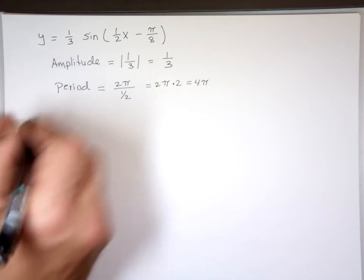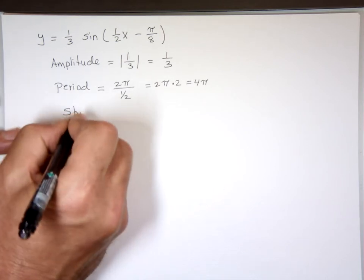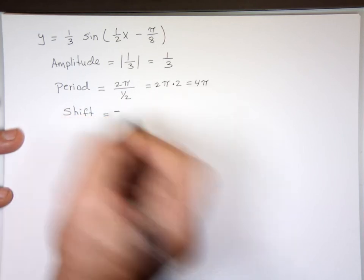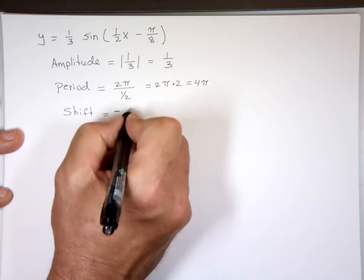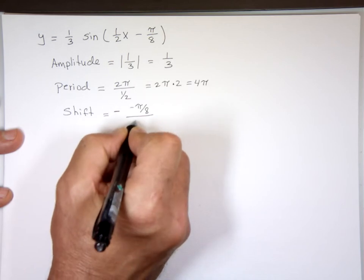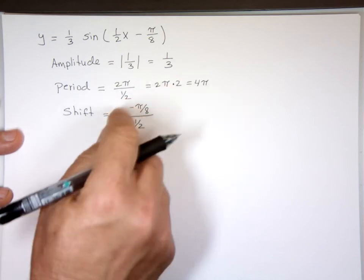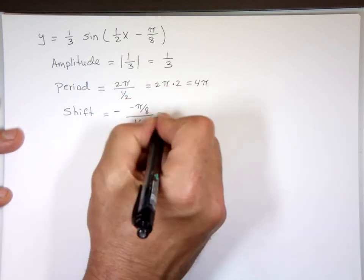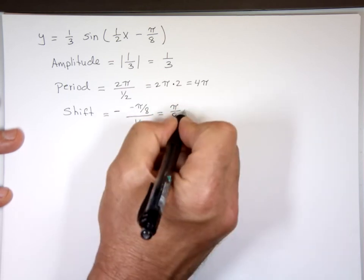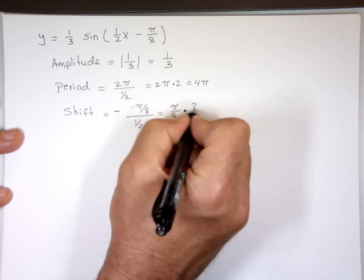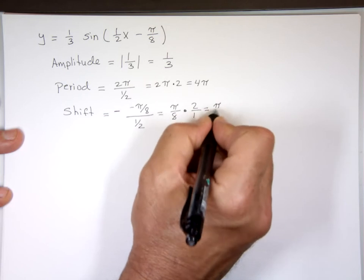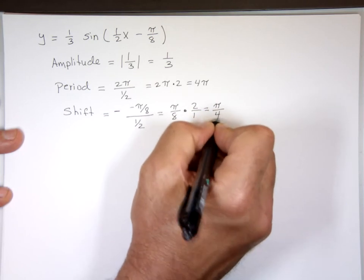The shift is negative C over B. C is negative π/8, so negative times negative gives a positive: π/8. Then divide by B, which is one half — dividing by one half is the same as multiplying by 2. So the shift is π/8 times 2, which is π/4, positive.